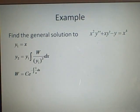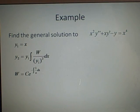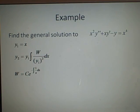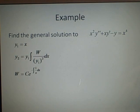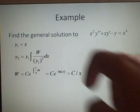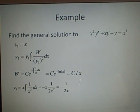For y2, we use the formula: y1 times the integral of the Wronskian over y1 squared dx. Our formula for the Wronskian is c·e to the minus integral of 1 over x — because that is our p now, since we've divided by x squared. This gives c over x as our Wronskian. Putting that in and solving gives us y2 equals minus 1 over 2x.